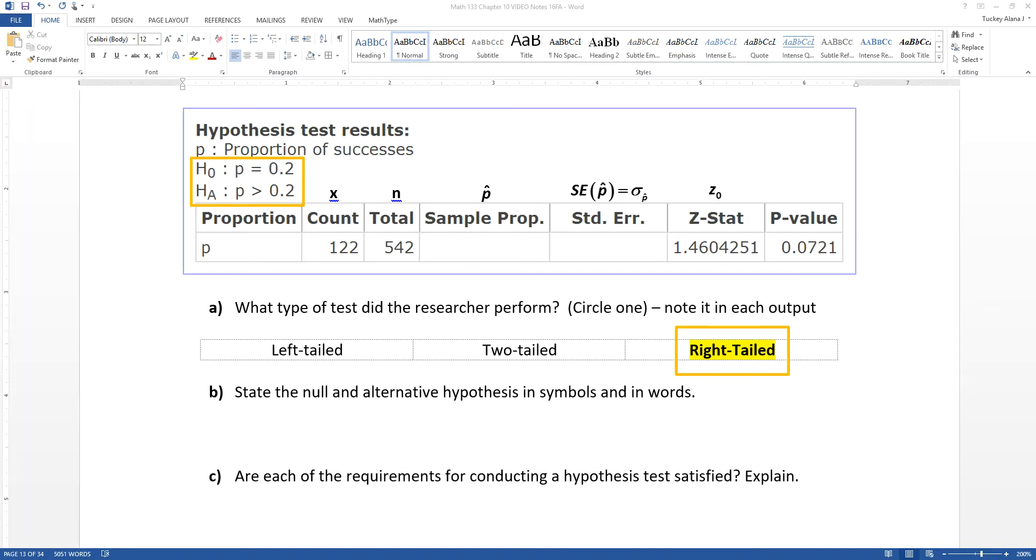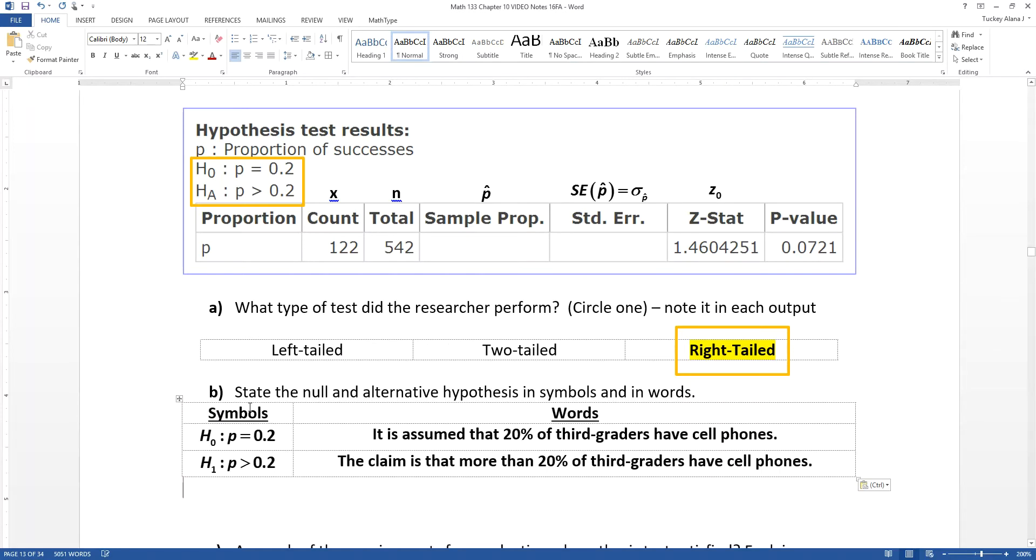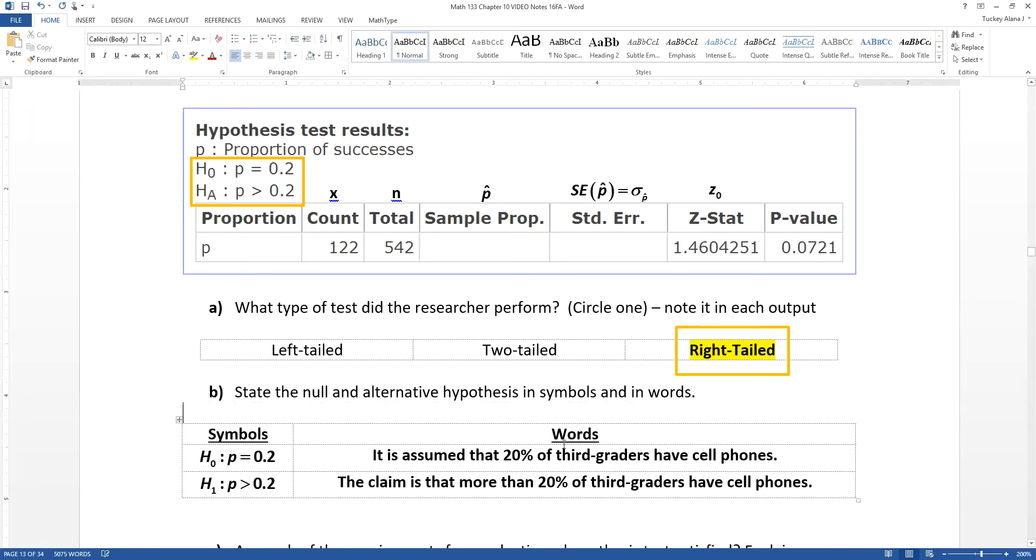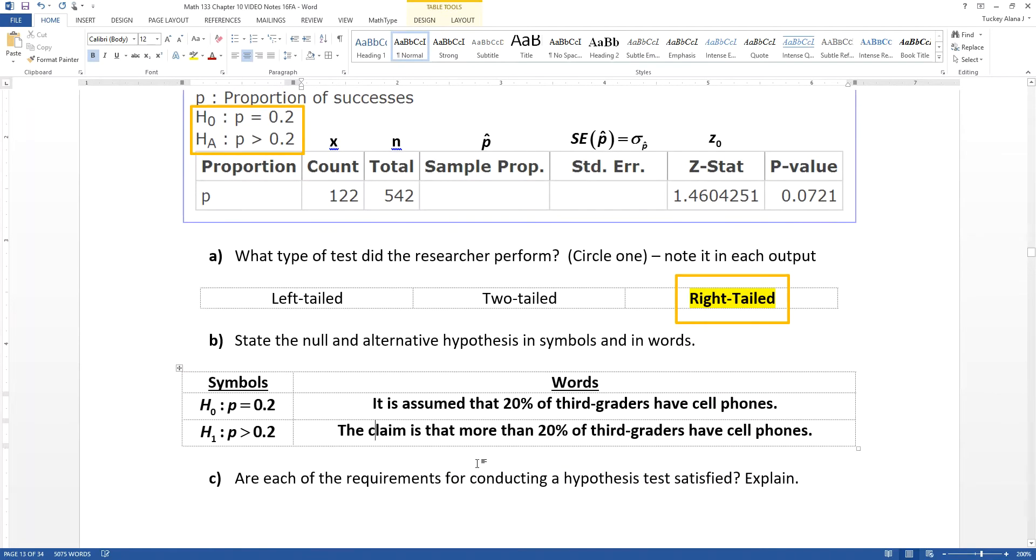Now the null and alternative would be that P equals 0.2 and P is greater than 0.2. Those are the symbols, but the words are explaining it in context. So we would assume that 20% of third graders have cell phones unless we can prove that it is more than that, which is our claim. So the claim is that more than 20% of third graders have cell phones.